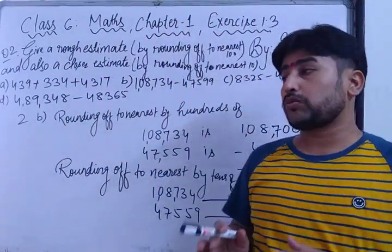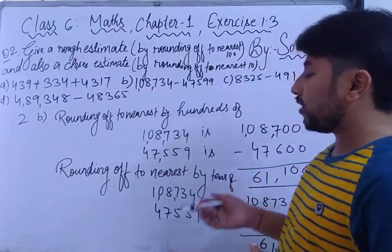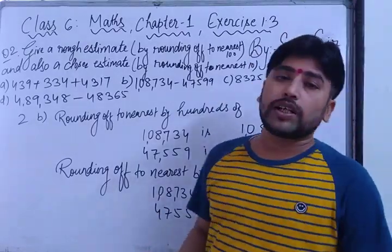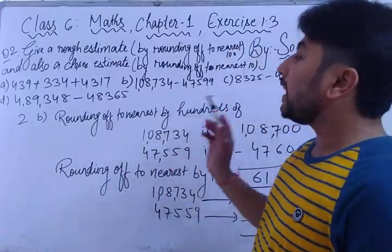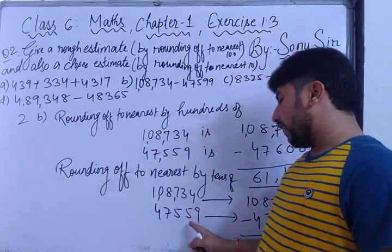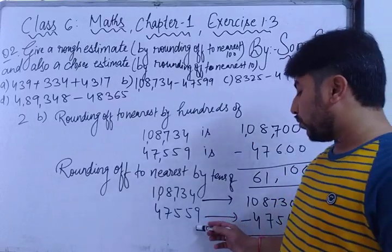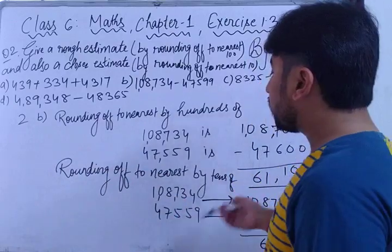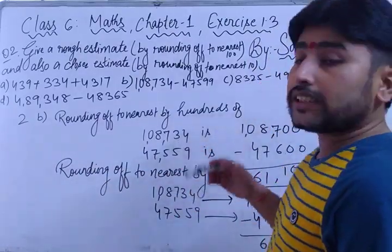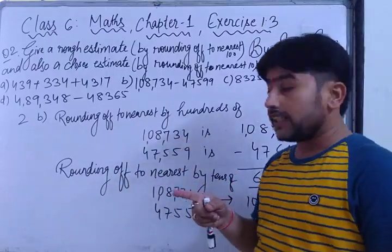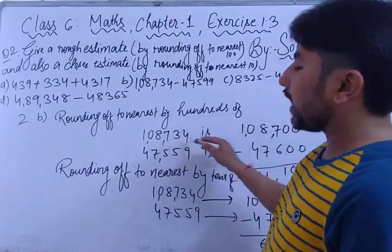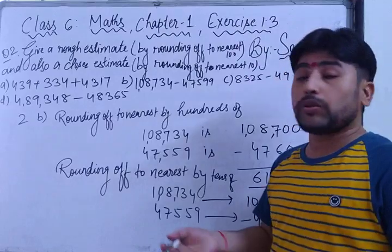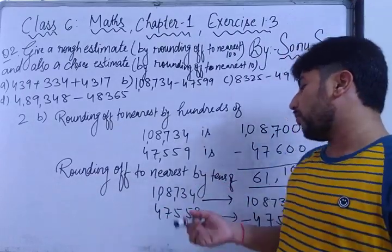You have to subtract 108730 minus 47560, giving 61170. The key concept: for rounding to tens, check the unit digit — if it's 5 or greater, add 1 to the tens digit. For rounding to hundreds, check the tens digit — if it's 5 or more, add 1 to the hundreds digit; if less than 5, both tens and unit places become 0.